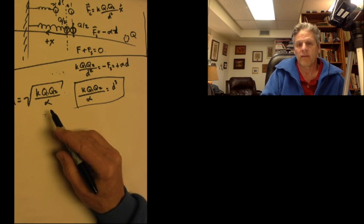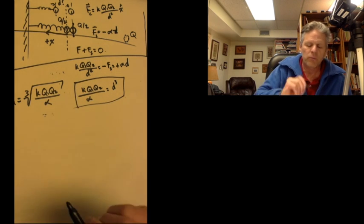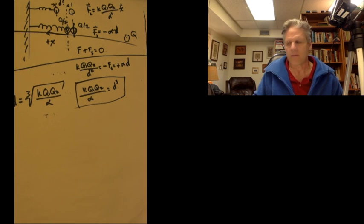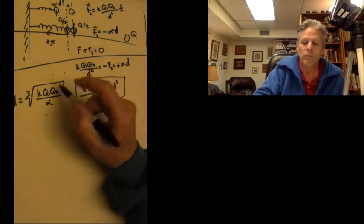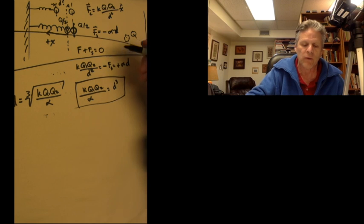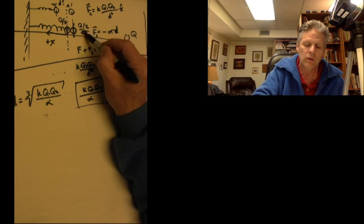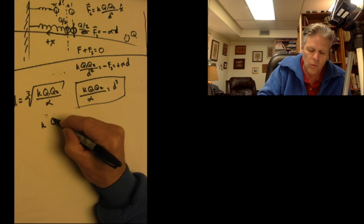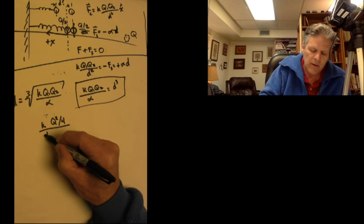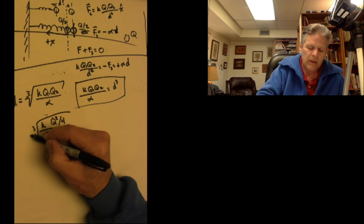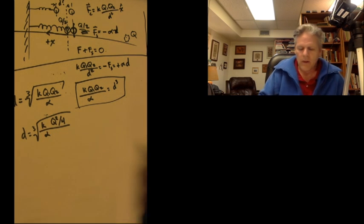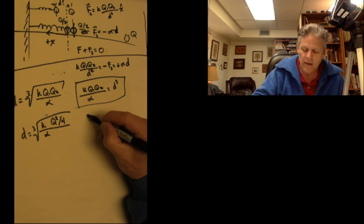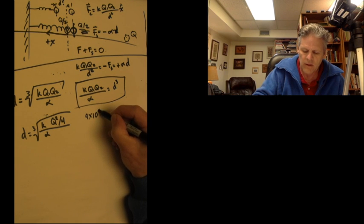Here, since we're asked for the distance and not the distance cubed, we're going to do D equals the cube root of KQ1Q2 over alpha. We are going to take advantage of the fact that we know that Q1 and Q2 are both equal to Q over 2. So what we really have here is KQ squared over 4 alpha, cube root, equals D.